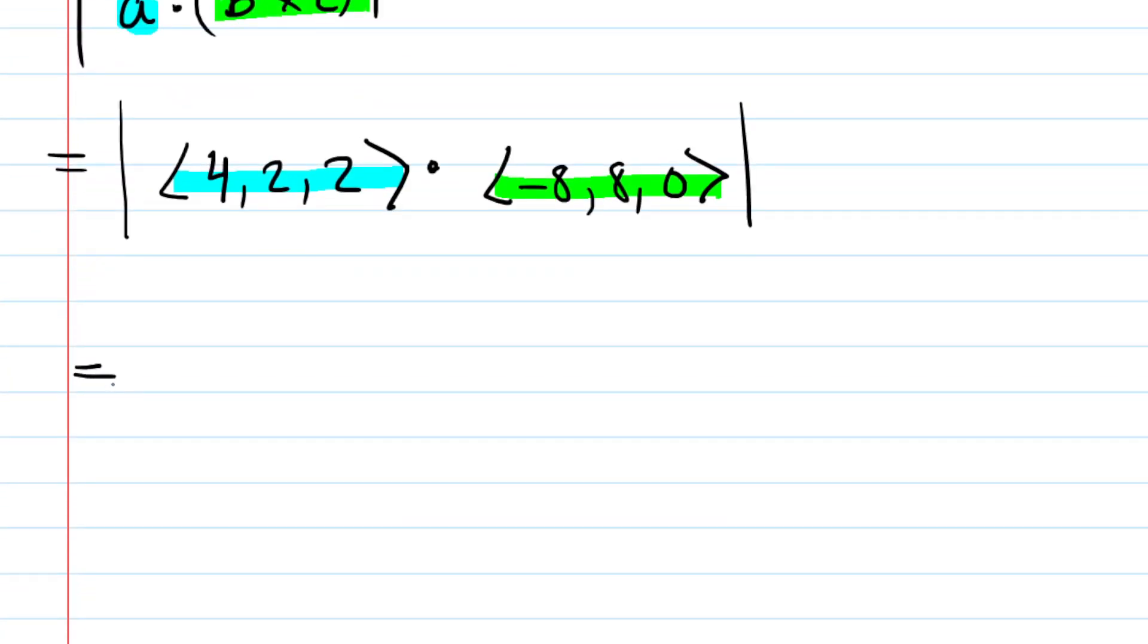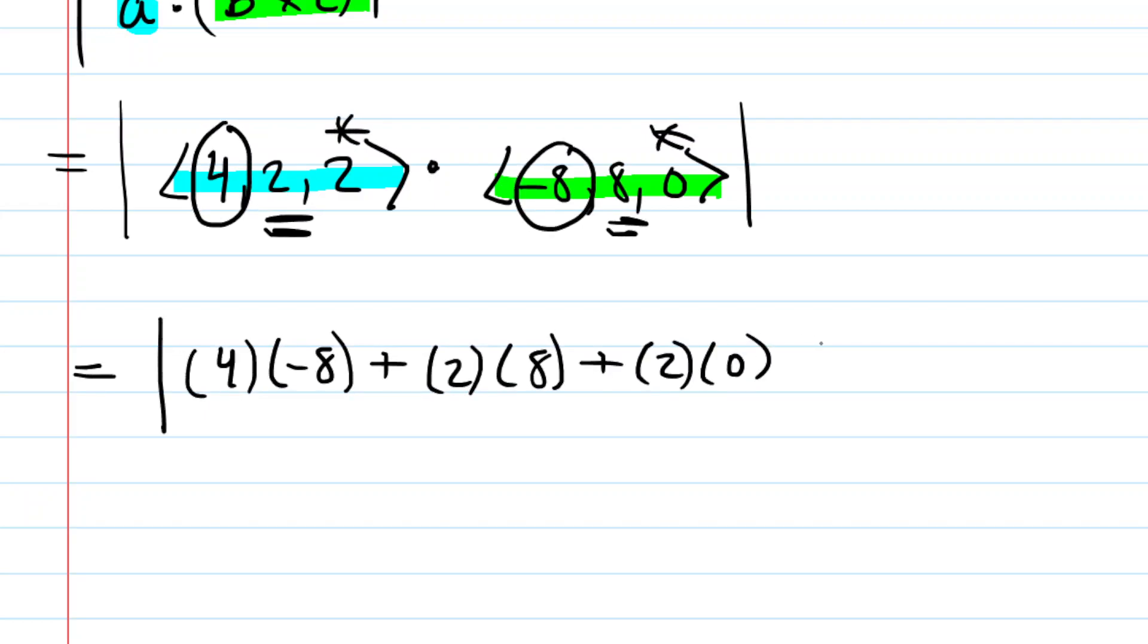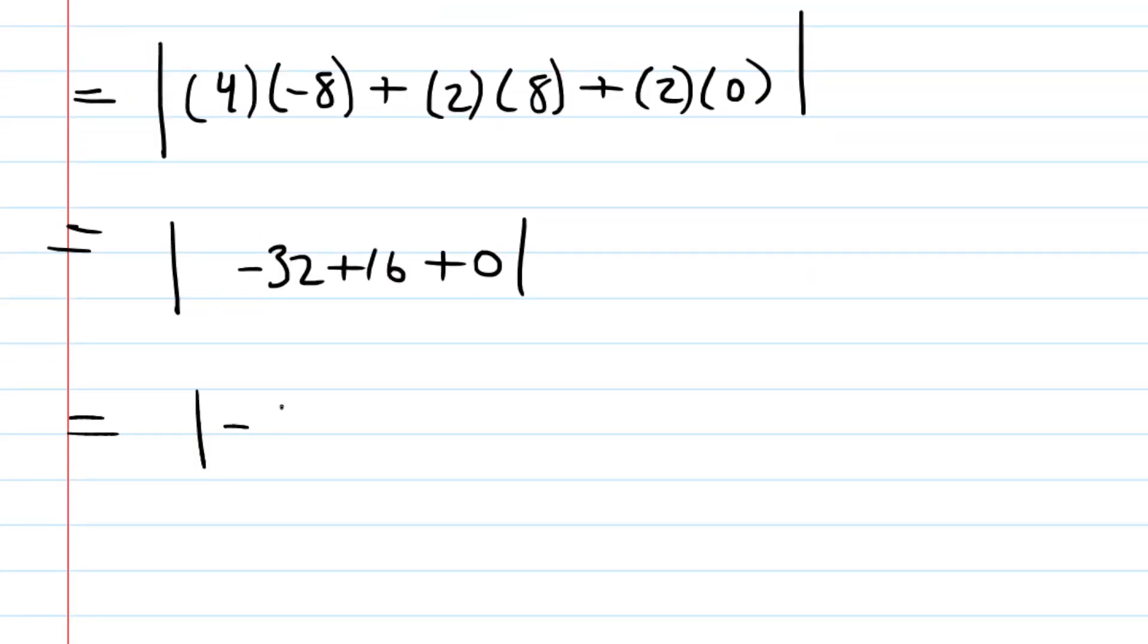And this is actually much easier because to do a dot product, all we do is take the product of the x components of our two vectors, and then add that to the product of the y components of the two vectors, and then finally add that to the product of the z component of the two vectors. And then we encase that in the absolute value. And now we just simplify, and we'll have the answer. So here we have negative 32 plus 16 plus 0. If we simplify inside, we're going to have the absolute value of negative 16, which of course is equal to positive 16. So positive 16 cubic units would be the correct answer for the volume of this three-dimensional figure.